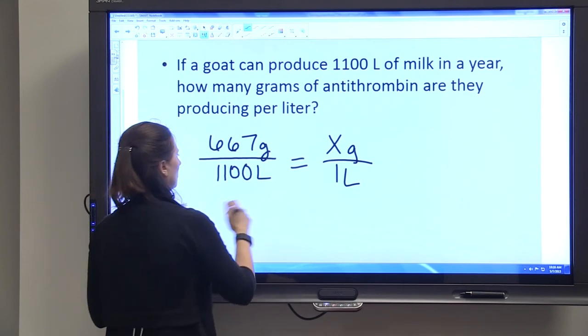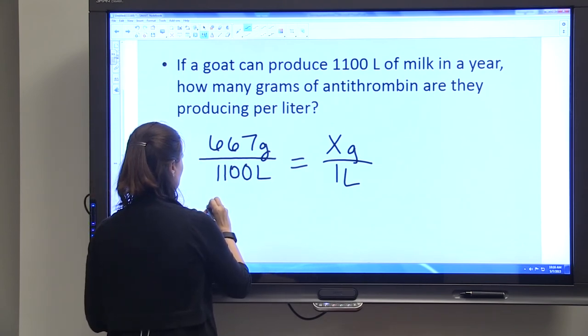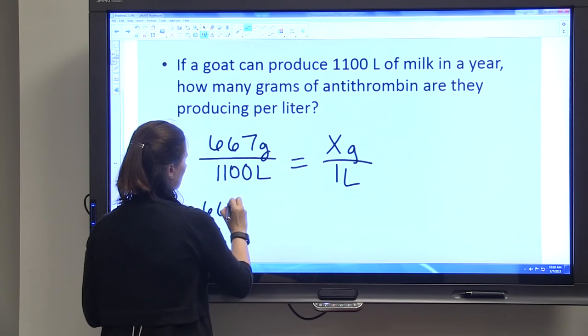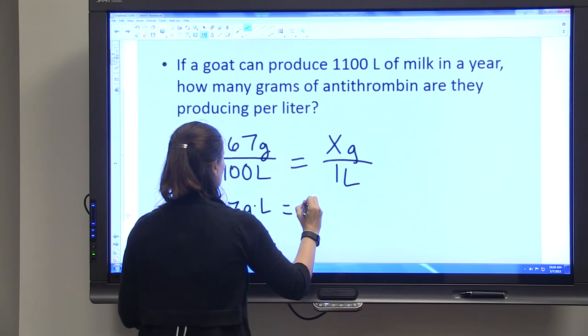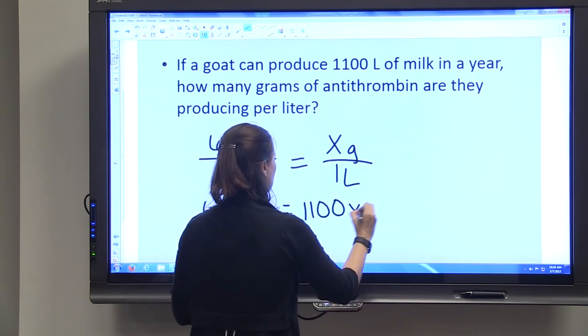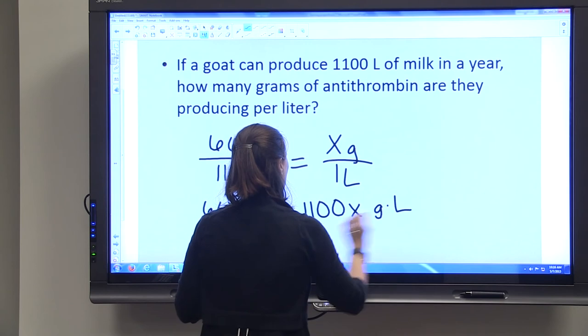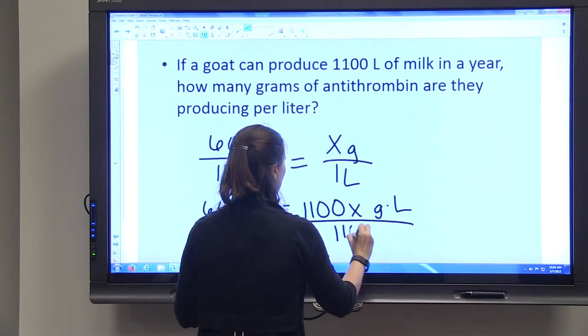So we have 667 grams per liter equals 1100x grams per liter. We're going to divide both sides by 1100 liters.